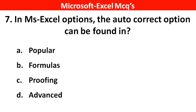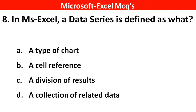Next question: in MS Excel options, the autocorrect options can be found in? Right answer is option C, Proofing. Next question: in MS Excel, a data series is defined as? Right answer is option D, a collection of related data.